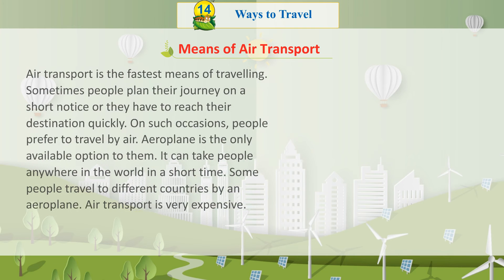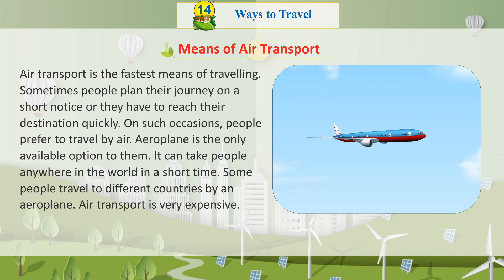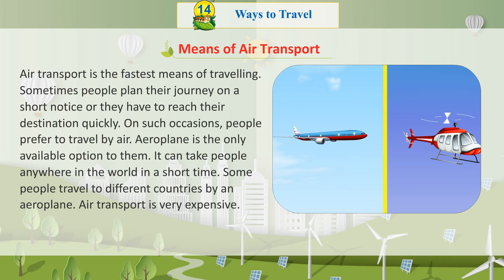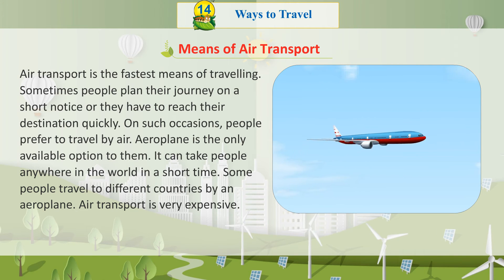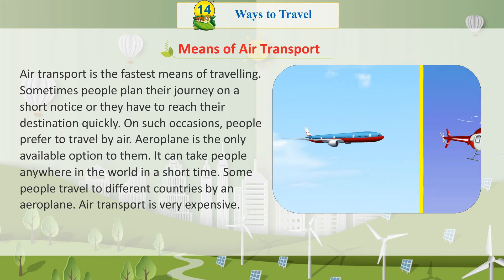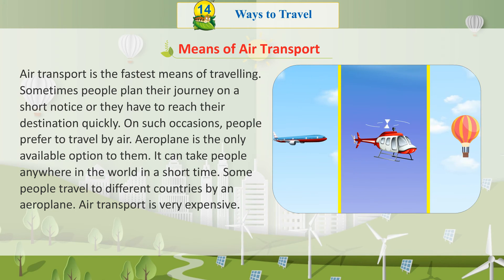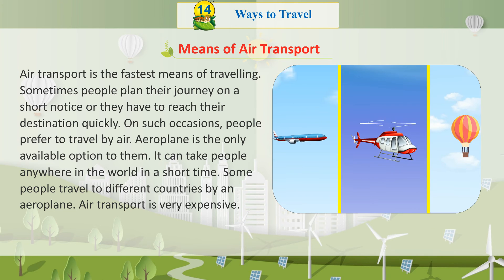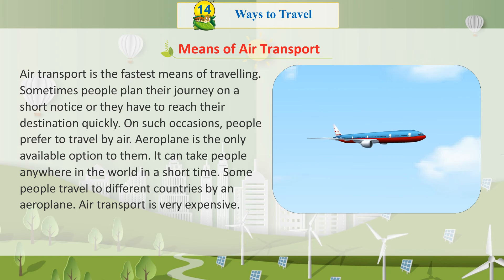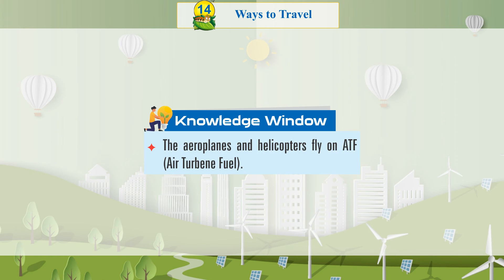Means of air transport. Air transport is the fastest means of travelling. Sometimes people plan their journey on short notice or have to reach their destination quickly. On such occasions, people prefer to travel by air. Aeroplane is the only available option to them. It can take people anywhere in the world in a short time. Some people travel to different countries by aeroplane. Air transport is very expensive. Knowledge Window: Aeroplanes and helicopters fly on ATF — Air Turbine Fuel.